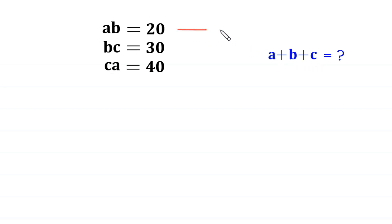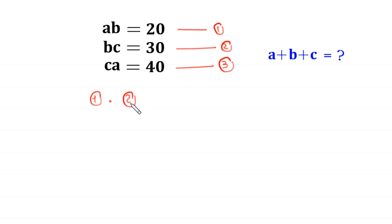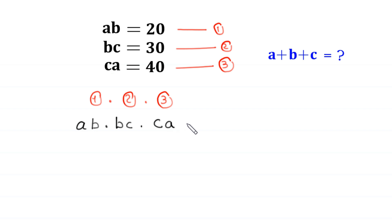Let us call this equation 1, this equation 2, and this equation 3. Now we multiply all three equations — equation 1 times equation 2 times equation 3. This will become AB times BC times CA is equal to 20 times 30 times 40.